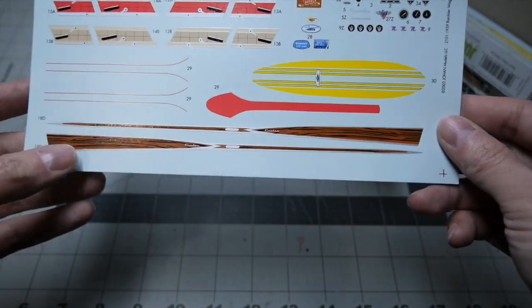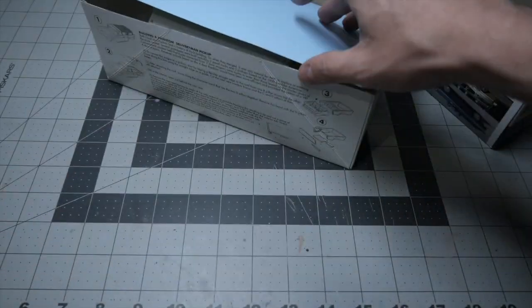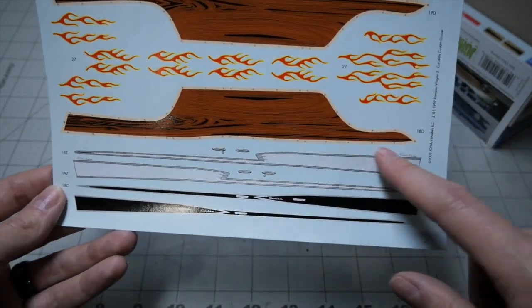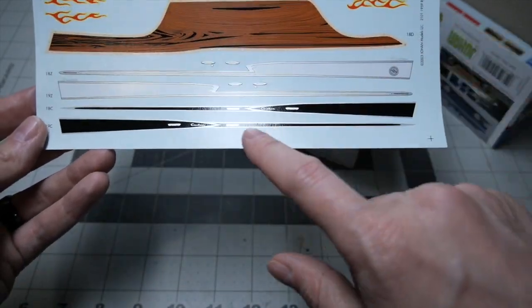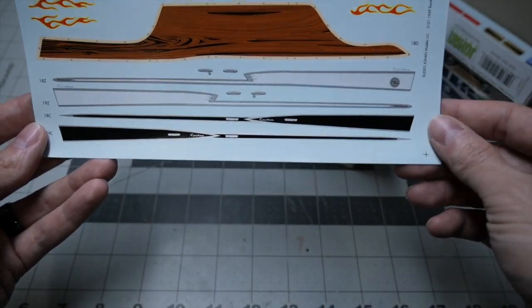Surfboard and wood striping, pretty cool overall. Next, some flames, more wood paneling, and then different options for chrome and trim.